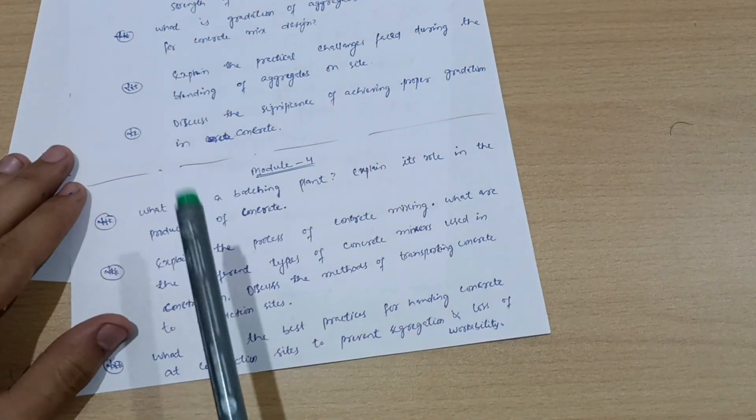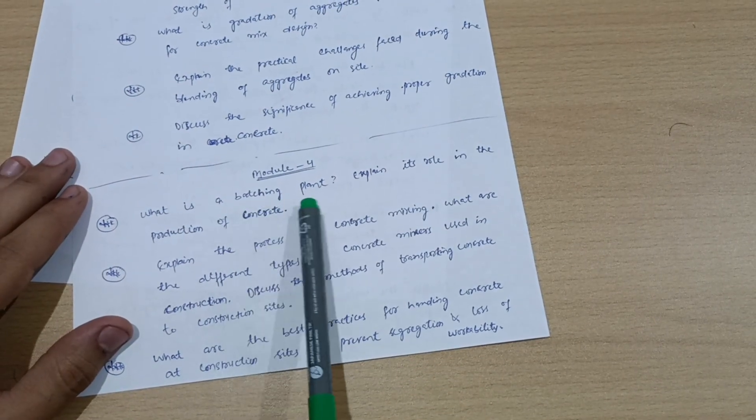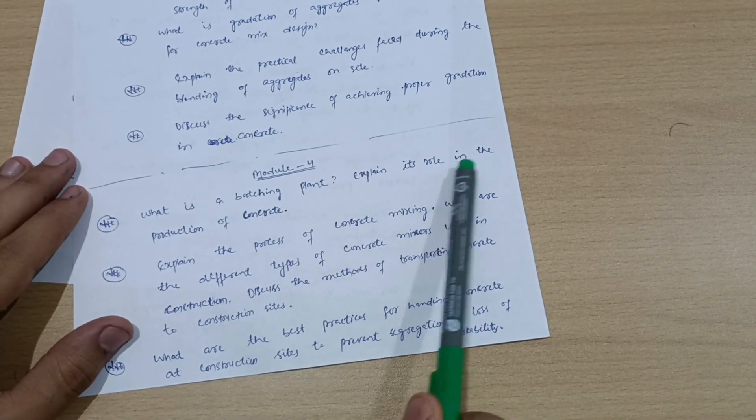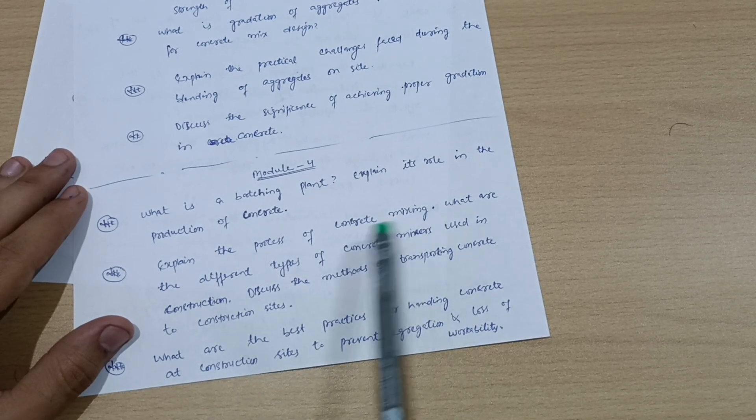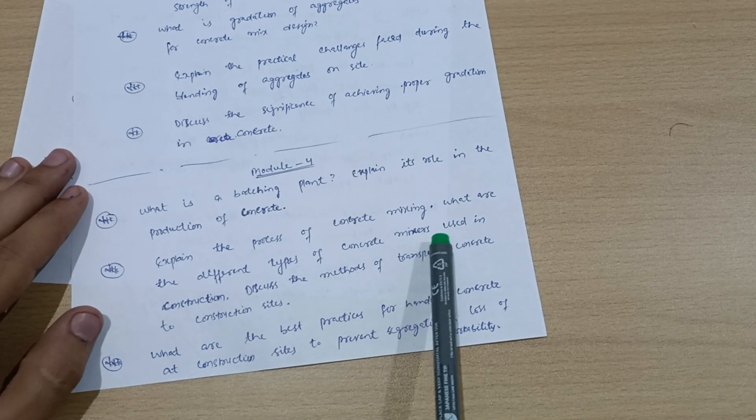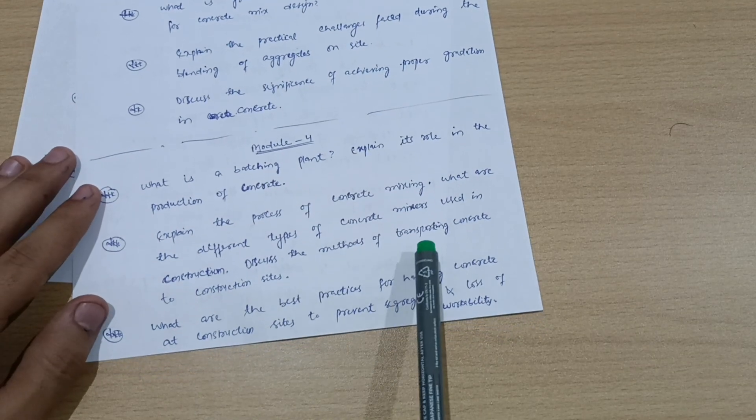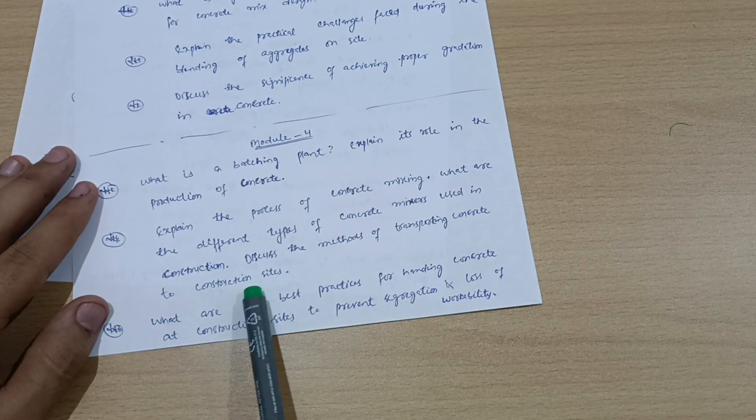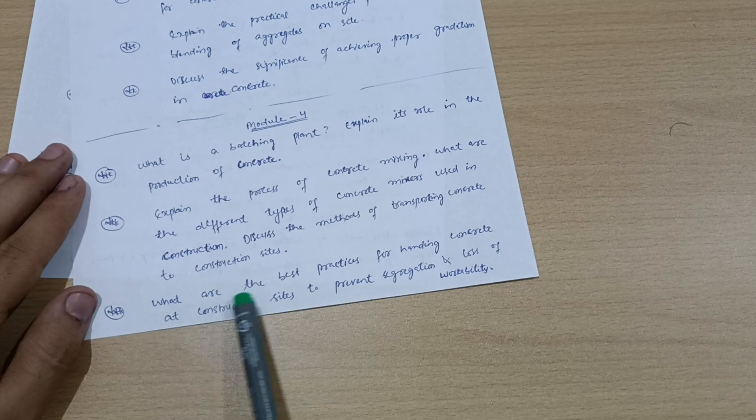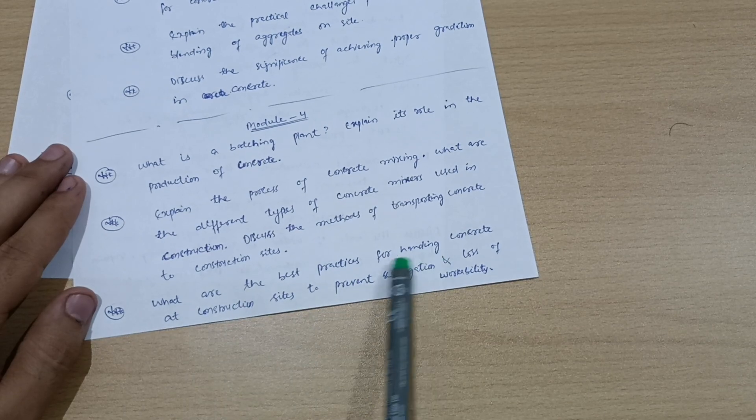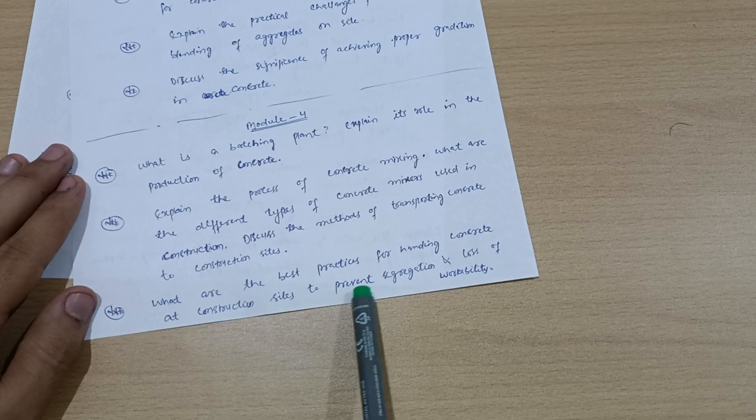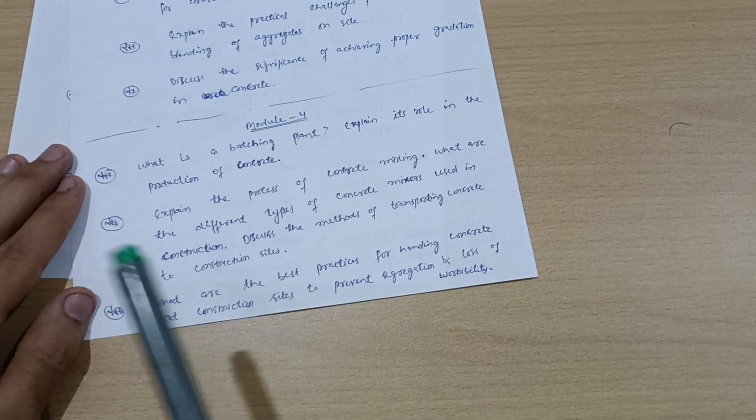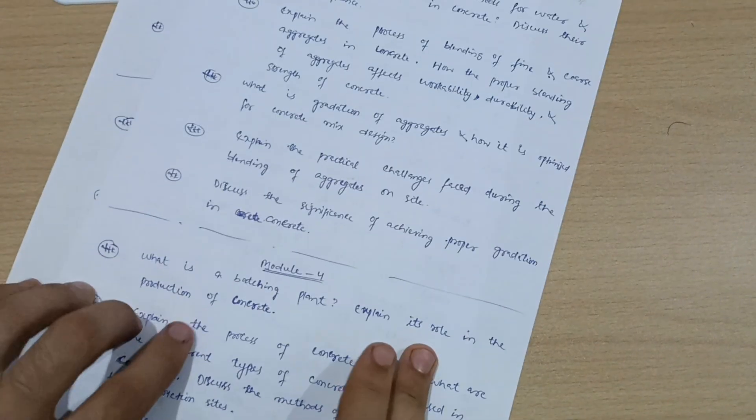Now next is Model 4. What is a batching plant? Explain its role in production of concrete. Explain the process of concrete mixing. What are the different types of concrete mixers used in construction? Discuss the methods of transporting concrete to construction sites. What are the best practices for handling concrete at construction sites to prevent segregation and loss of workability?